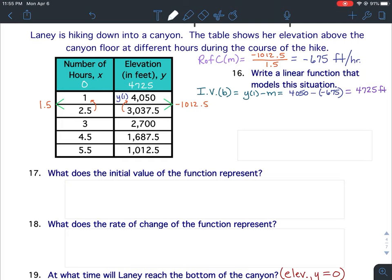Okay. So I'm ready to write my equation. Remember, y equals mx plus b, slope goes in front of x, y-intercept goes behind x. So my equation for this problem is y equals negative 675x plus 4,725.